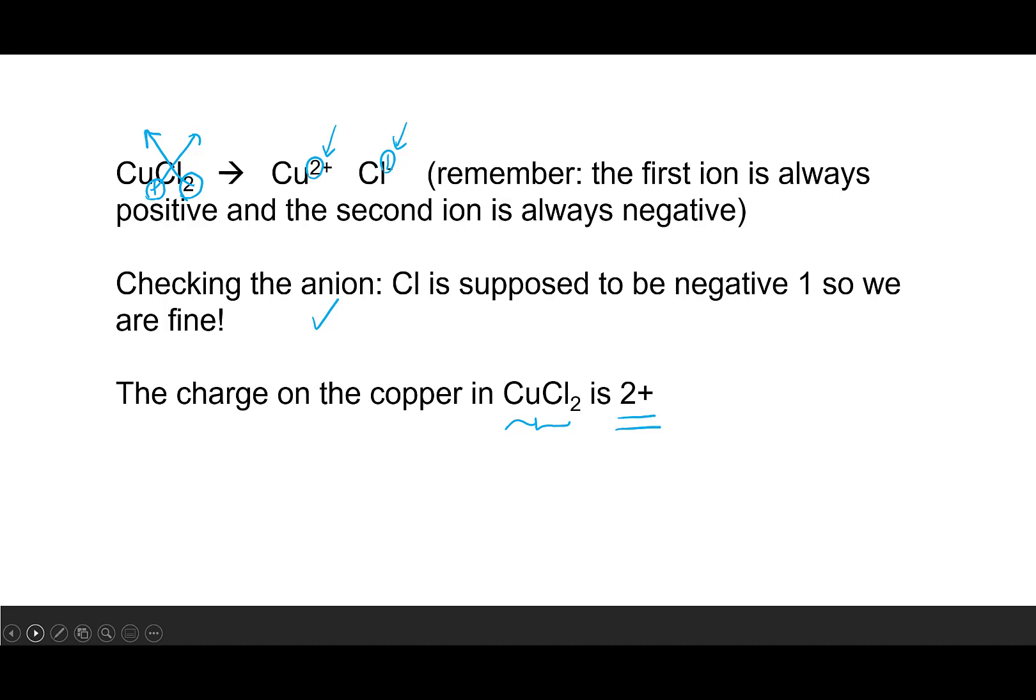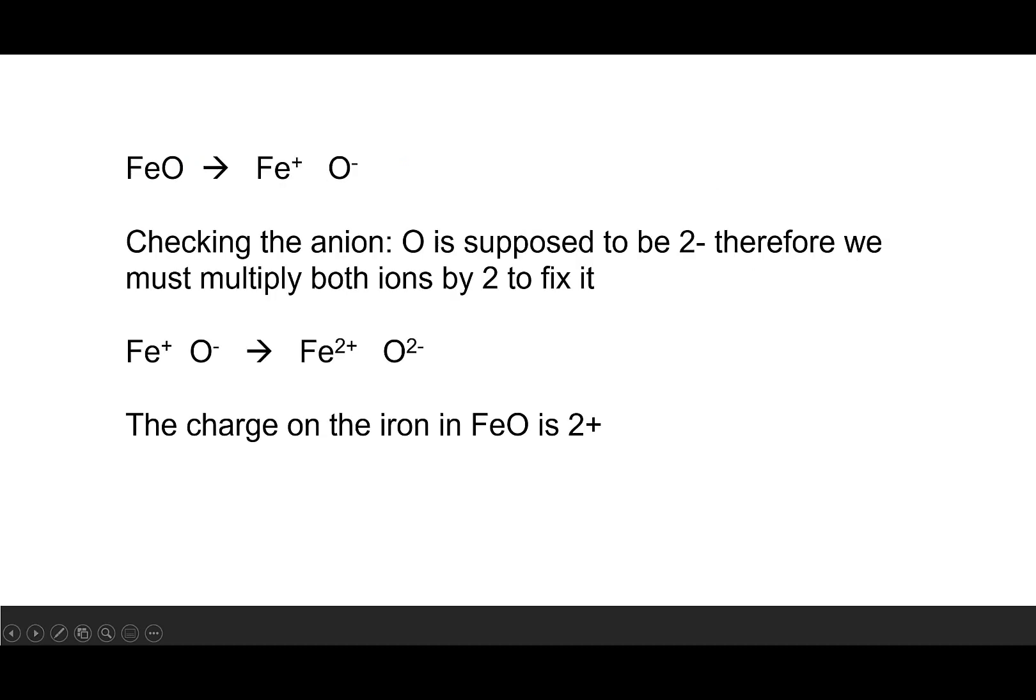Let's look at another example: FeO. There is one iron and one oxygen. The first is positive, the second is negative. Now I need to check the anion. Oxygen is supposed to be 2- based on its position on the periodic table. O2- is the correct anion for oxygen, so we're going to have to adjust by multiplying both by 2. We end up with Fe2+ and O2-.